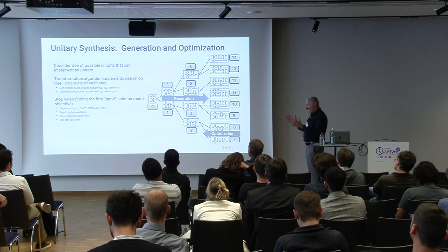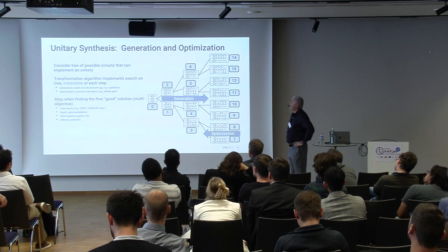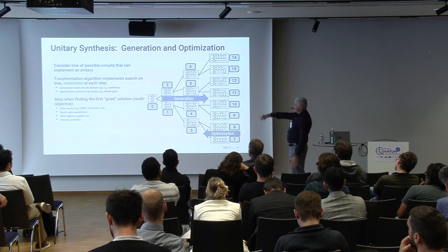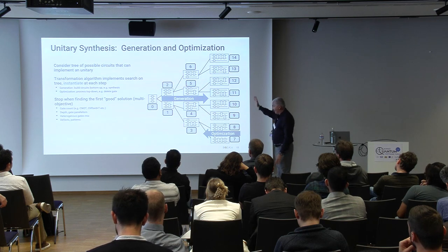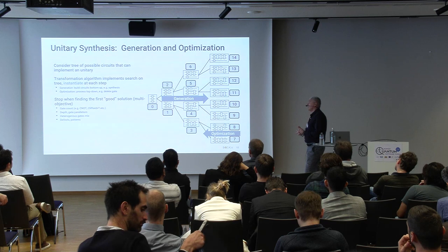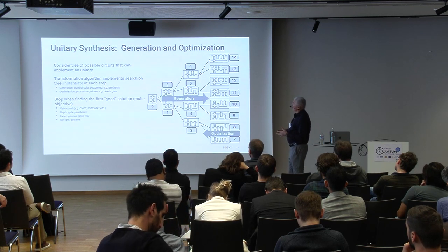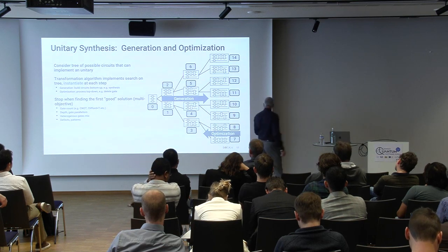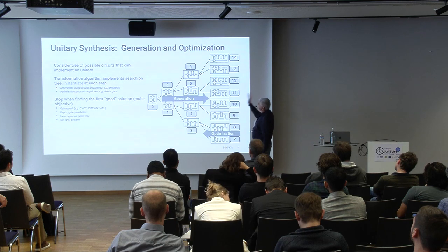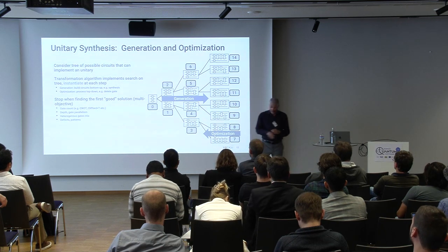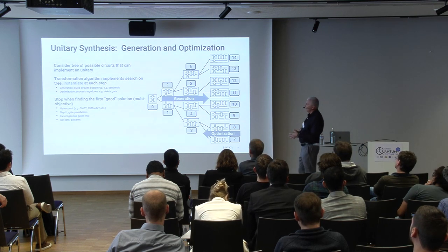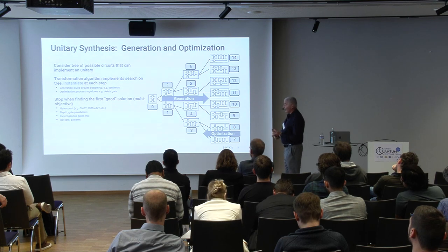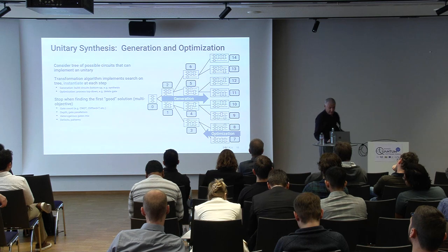The generic way we do things, you can think about it as unitary synthesis. The idea is to consider all possible circuits that implement all possible programs, and enumerate them in some programmatic way — here we enumerate them in terms of depth. Any transformation is pretty much a walk on this tree. For circuit generation or synthesis, you start from the root and grow your circuit toward the leaves. If you already have a circuit and want to optimize it — for example, delete gates — you start from the leaves and walk backwards toward the root. The walking strategy is the algorithm, and you can plug in any objective function: optimize gate count, optimize for depth, handle heterogeneous gate mixes, or use heuristics for defects and patterns.